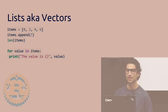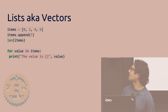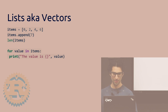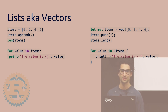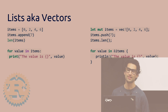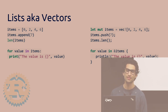Lists in Rust are called vectors. Here's a simple Python example where you have some integers and you're appending a number at the end, then printing the length and iterating through it. In Rust, you have to use the 'mut' keyword because you're going to be changing the vector — adding an element to it. Instead of the length function, it's a dot len attribute. Instead of append, it's dot push. When you iterate, you use curly brackets, not empty space like Python. There's also a fancy ampersand symbol which I'll get to.